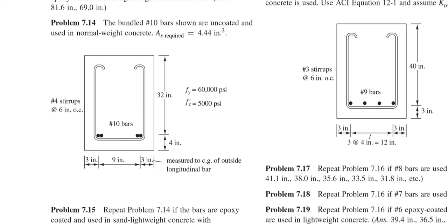Now I will solve another development length problem for bundled bar. This problem I took from your book. It says the bundled number 10 bars shown are uncoated, that means no epoxy, and used in normal weight concrete. Normal weight concrete area of reinforcement required is 4.44 but they are providing two number 10, two number 10, total four number 10 bars.